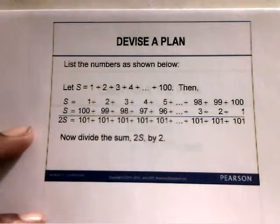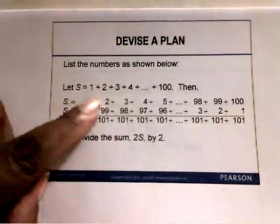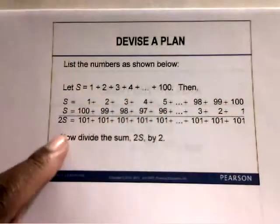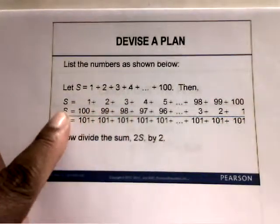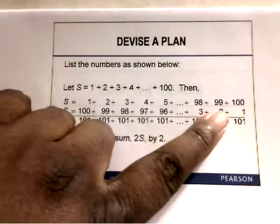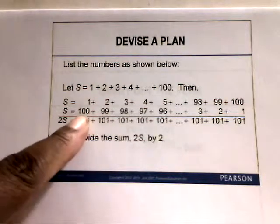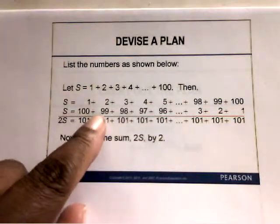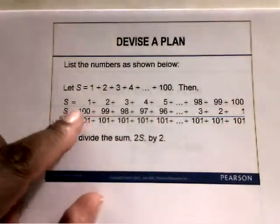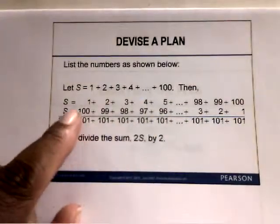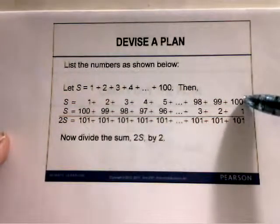Here we devise a plan. We list the numbers as shown, and let S be this sum: 1 plus 2 plus 3 plus 4 and so on up to 100. Then another S is the 100 numbers listed in descending order, starting with 100, 99, 98, 97, 96, all the way down to plus 3 plus 2 plus 1. The first one starts from 1 up to 100, and the second one starts from 100 down to 1. Now we're going to add these two together.